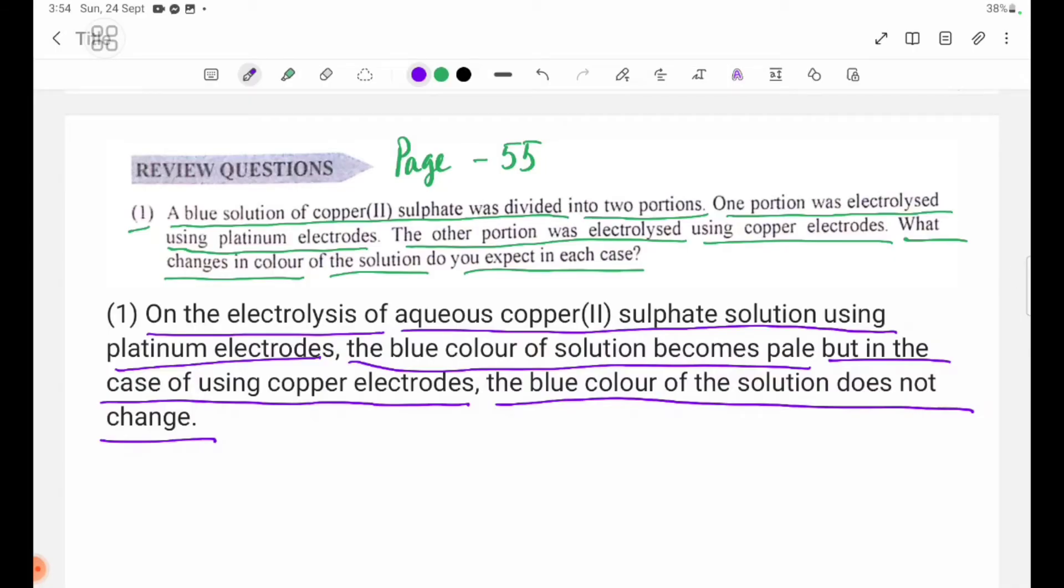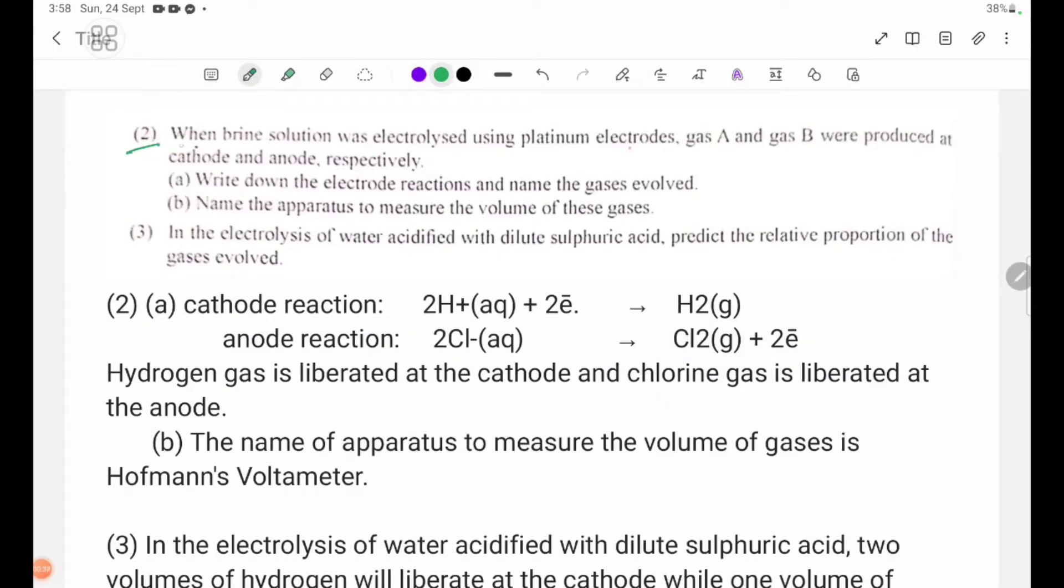Review question number two. When brine solution was electrolyzed using platinum electrodes, gas A and gas B were produced at cathode and anode, respectively.